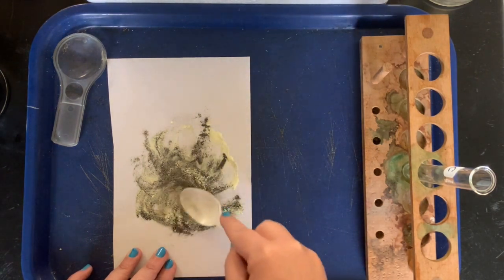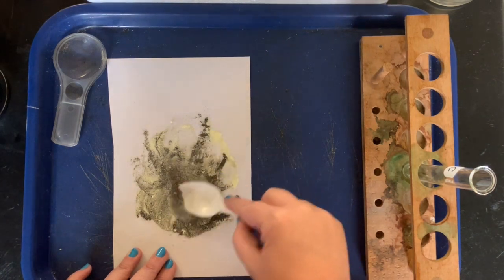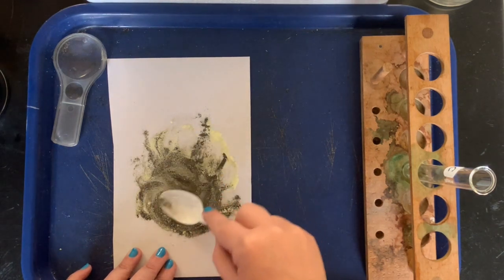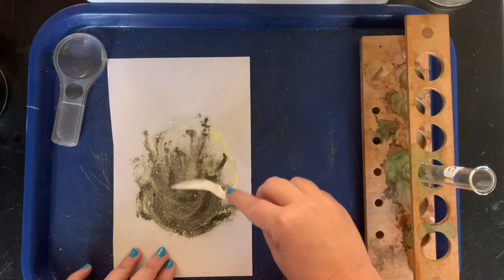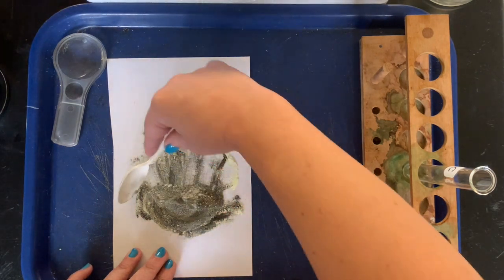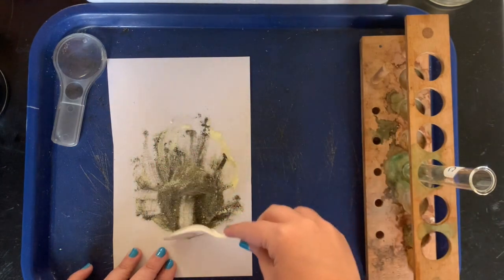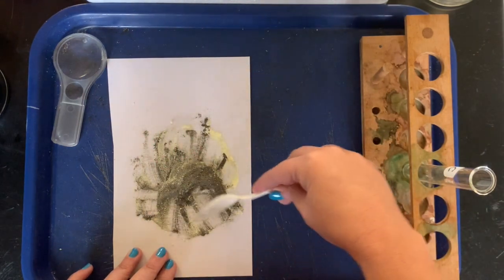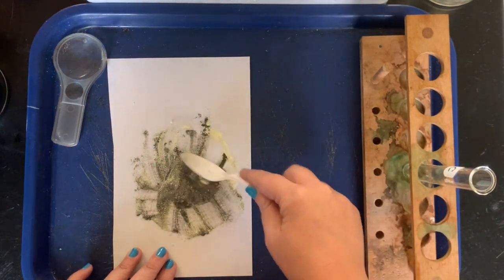And you can start to notice there is a little bit of a color change, but that's expected. Yeah, it's more like, you know, if you mix black and white paint and you got gray, this is like mixing a dark brown and a light yellow, so we're gonna get kind of a gray.